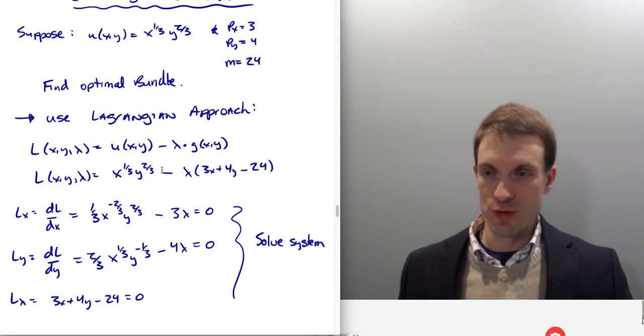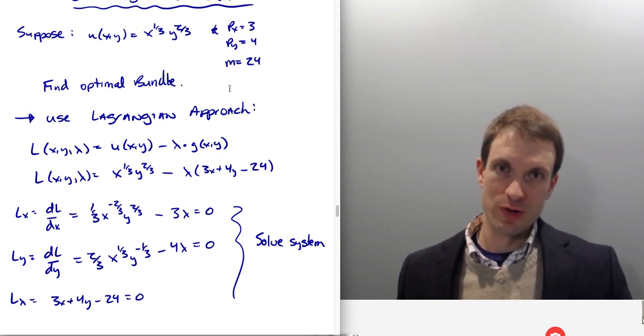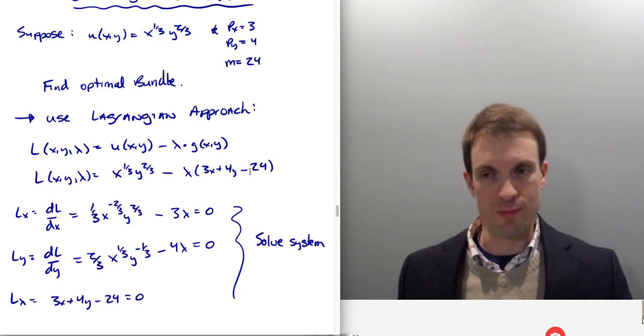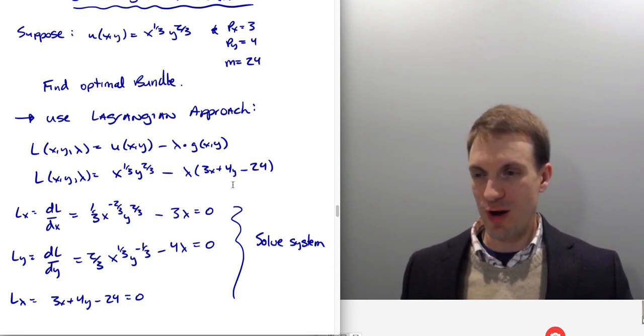So here is my utility function: X to the 1/3, Y to the 2/3, minus Lambda times the quantity 3X plus 4Y minus 24. So budget constraint, basically what I do is I take my budget constraint, drop it in with a minus sign here instead of an equals, so minus Lambda budget constraint with a minus instead of an equals, and there's my Lagrangian.